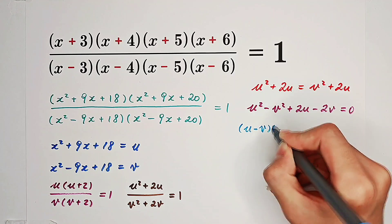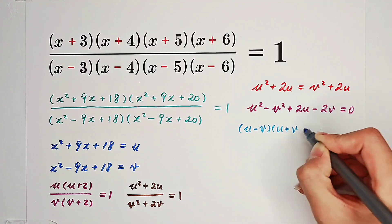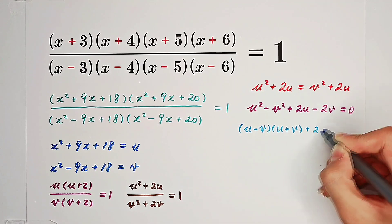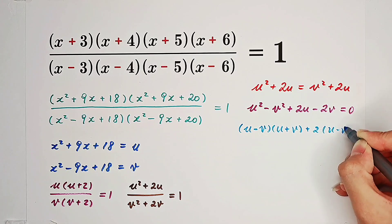Here we can actually factorize. It is u minus v times u plus v, and here as well, 2 times u minus v.